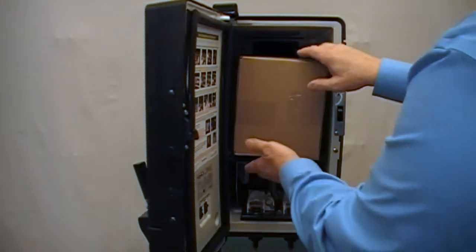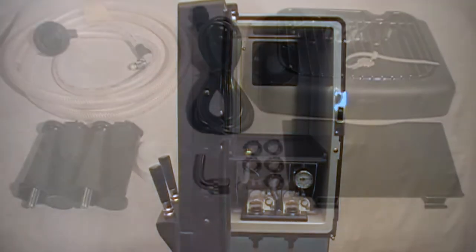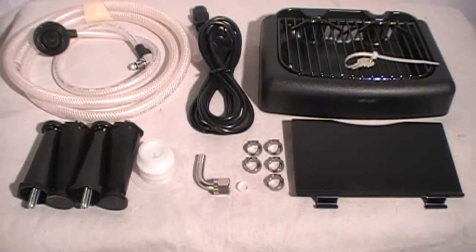Next, remove the installation kit box from the inside of the unit's cabinet. The dispenser comes with the components shown as part of the installation kit.